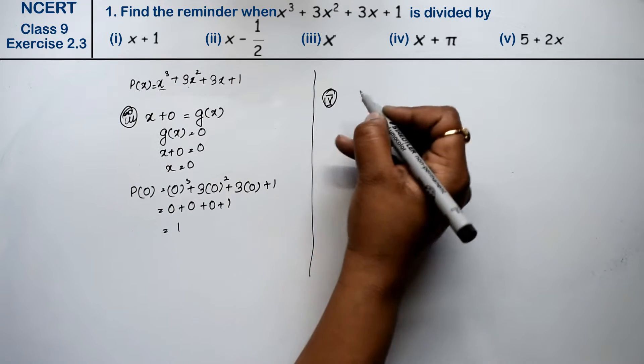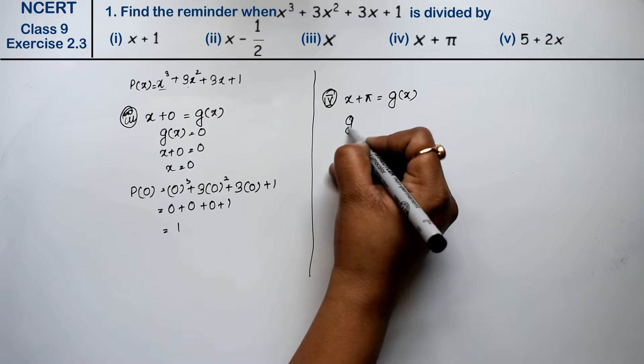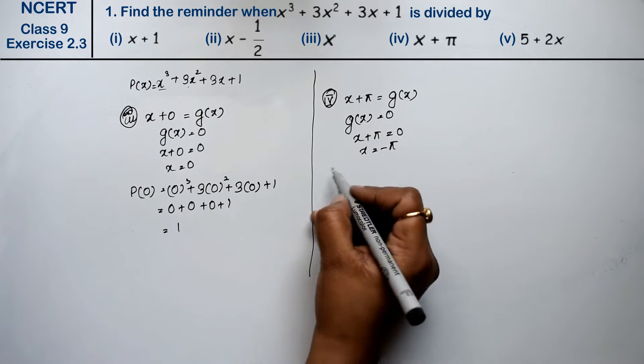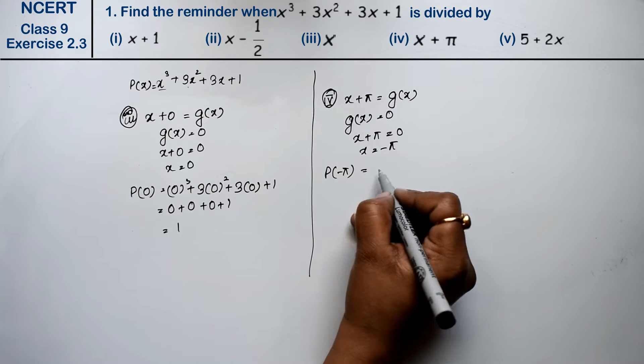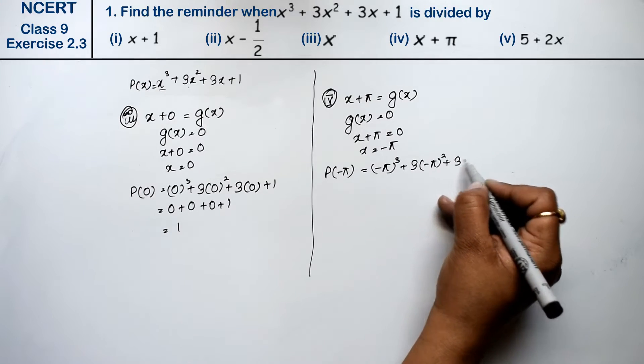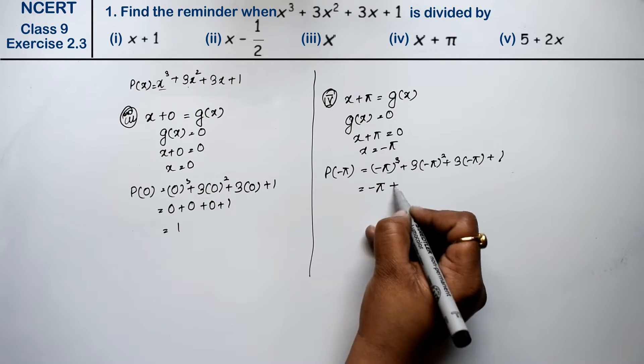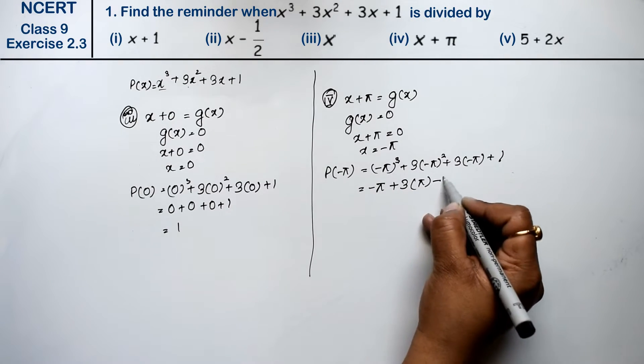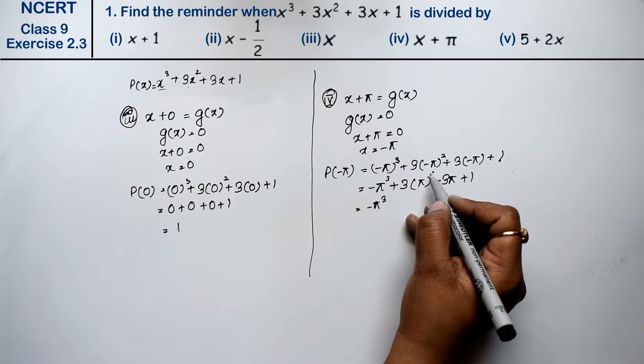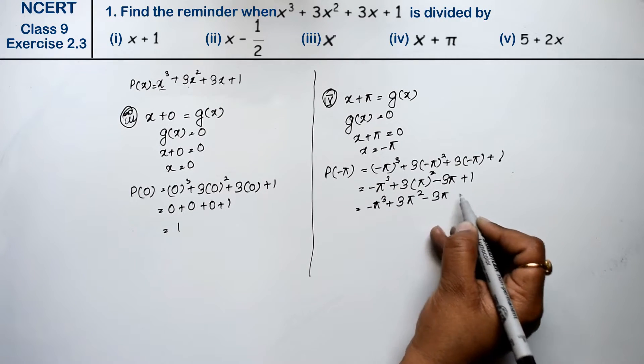Let's do fourth part. Fourth part is x plus pi equal to g(x). Now g(x) equal to 0, so x plus pi equals to 0, x value is minus pi. Now in p(x), x value minus pi, so minus pi cubed plus 3 into minus pi squared plus 3 into minus pi plus 1. Odd power is negative, so minus pi cube plus 3 into pi square, even is positive, plus minus 3 pi plus 1. This equals minus pi cube plus 3 pi square minus 3 pi plus 1 is the answer.